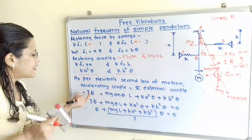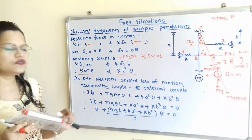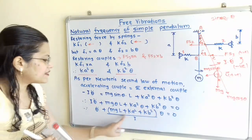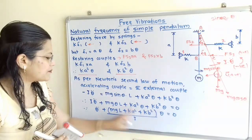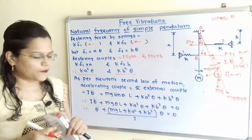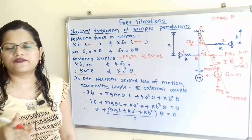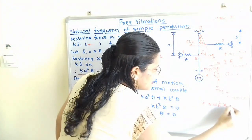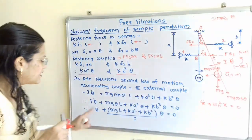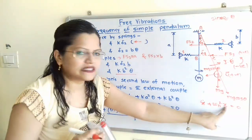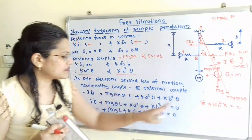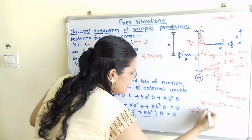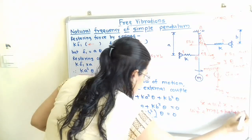Simplifying by moving terms to one side gives: theta double dot plus (Mg L plus K A squared plus K B squared) times theta divided by I equals 0. Comparing with the standard free vibration equation X double dot plus omega N squared X equals 0, where X double dot corresponds to theta double dot and X corresponds to theta, we get omega N squared equals (Mg L plus K A squared plus K B squared) divided by I.